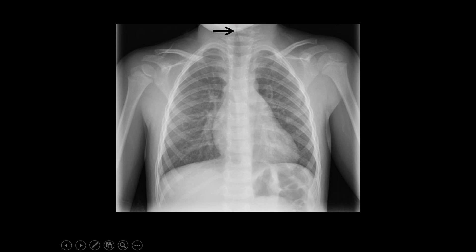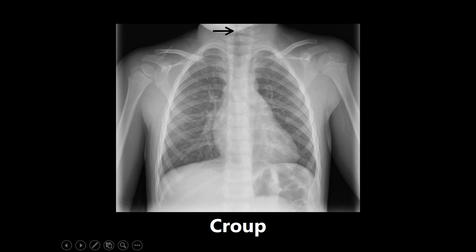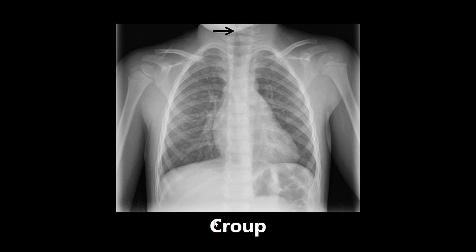This next one shows the steeple sign on chest X-ray — that triangular point that looks like the steeple of a church — and that's usually a giveaway for croup. Another name for croup is acute laryngotracheobronchitis, so don't get confused if you see that term on the exam. Another common thing in the vignette is that seal-bark cough a kid has, which also points to croup. Important to know that croup is caused by parainfluenza viruses.